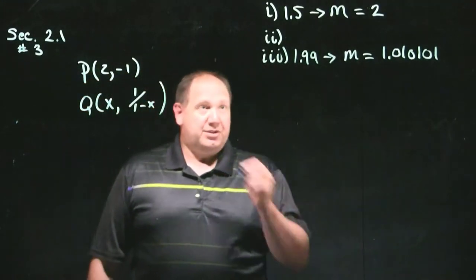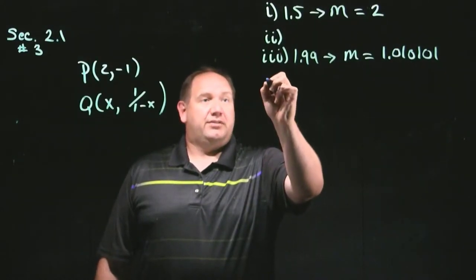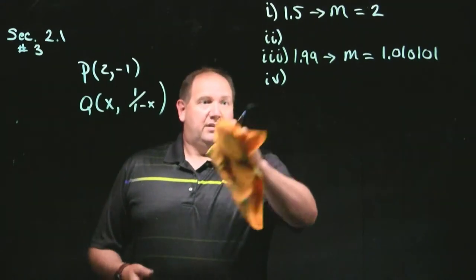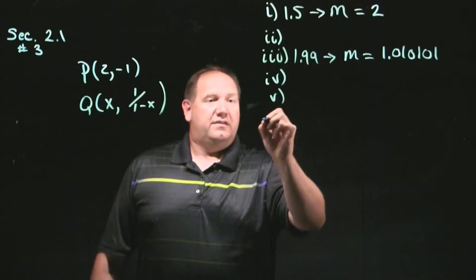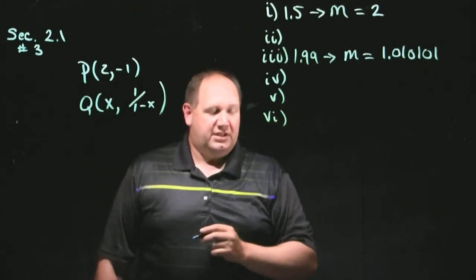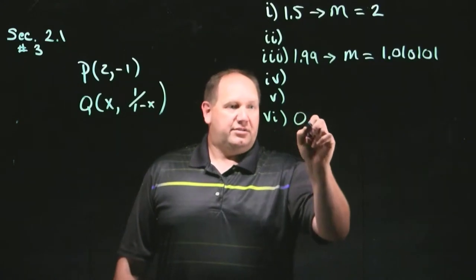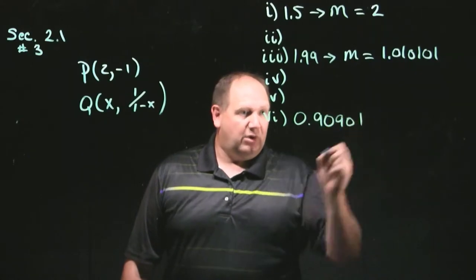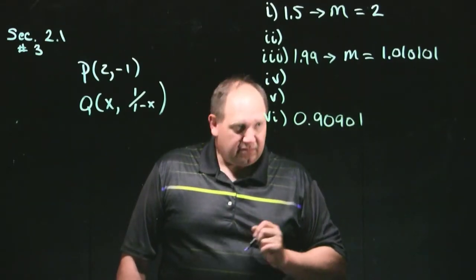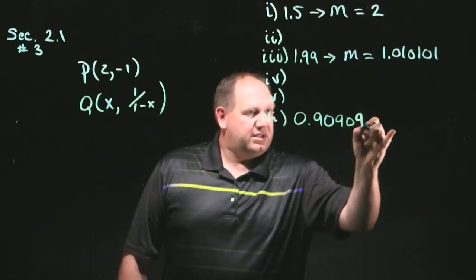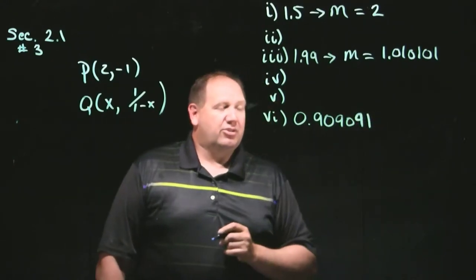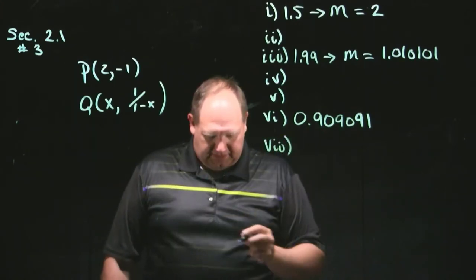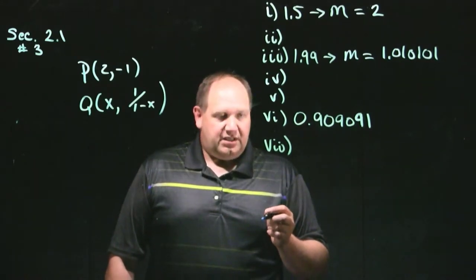I also worked out, and of course you can look in the back of your book, you have to figure out what 4 is. But I worked out what 5, I worked out vi, and I found vi to be 0.90901.